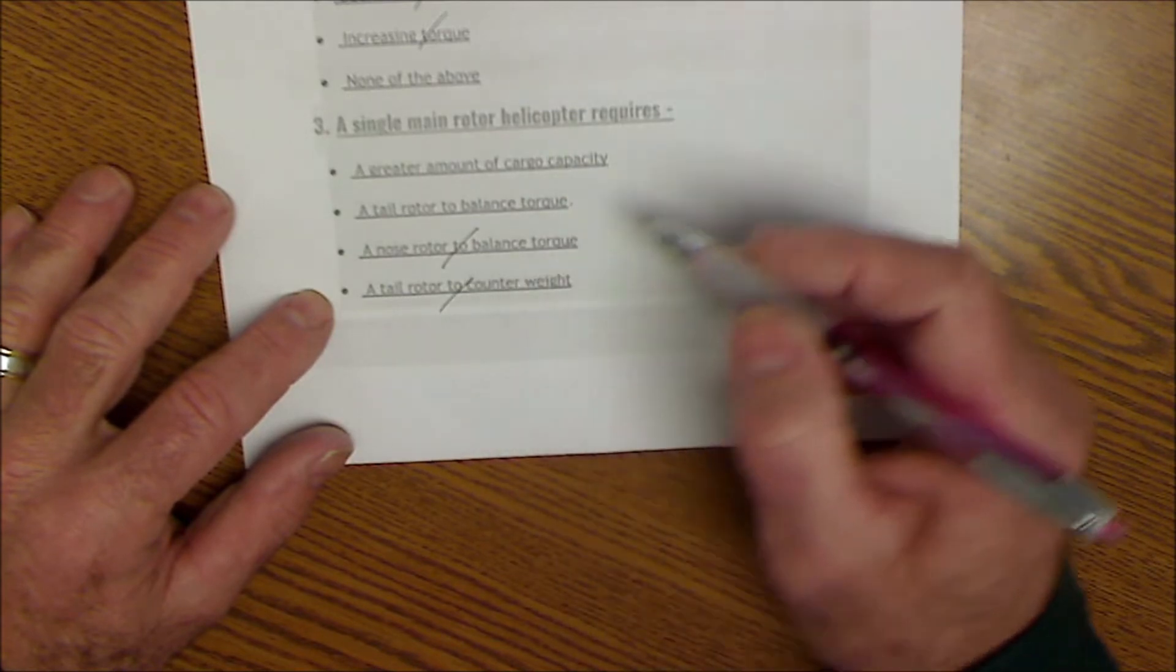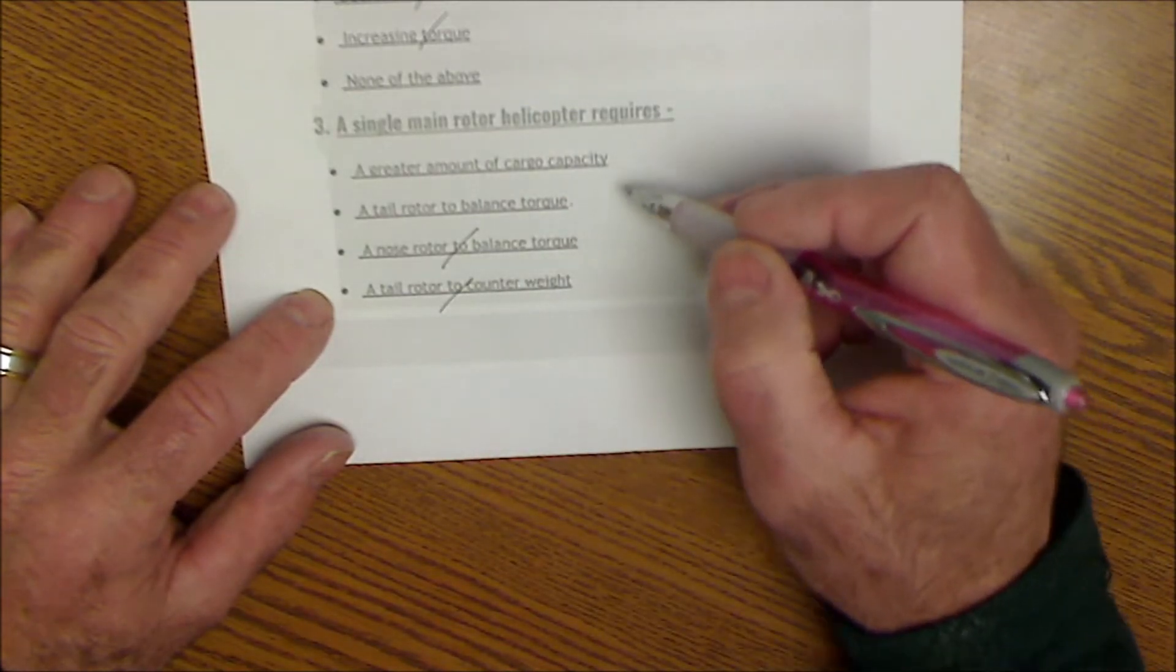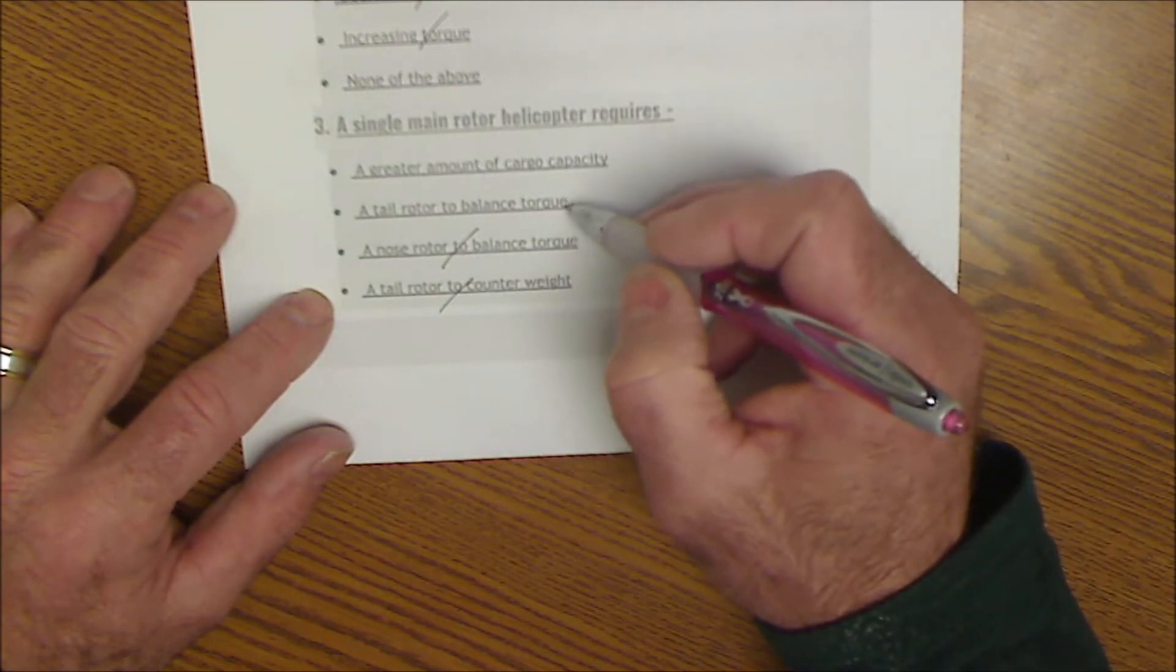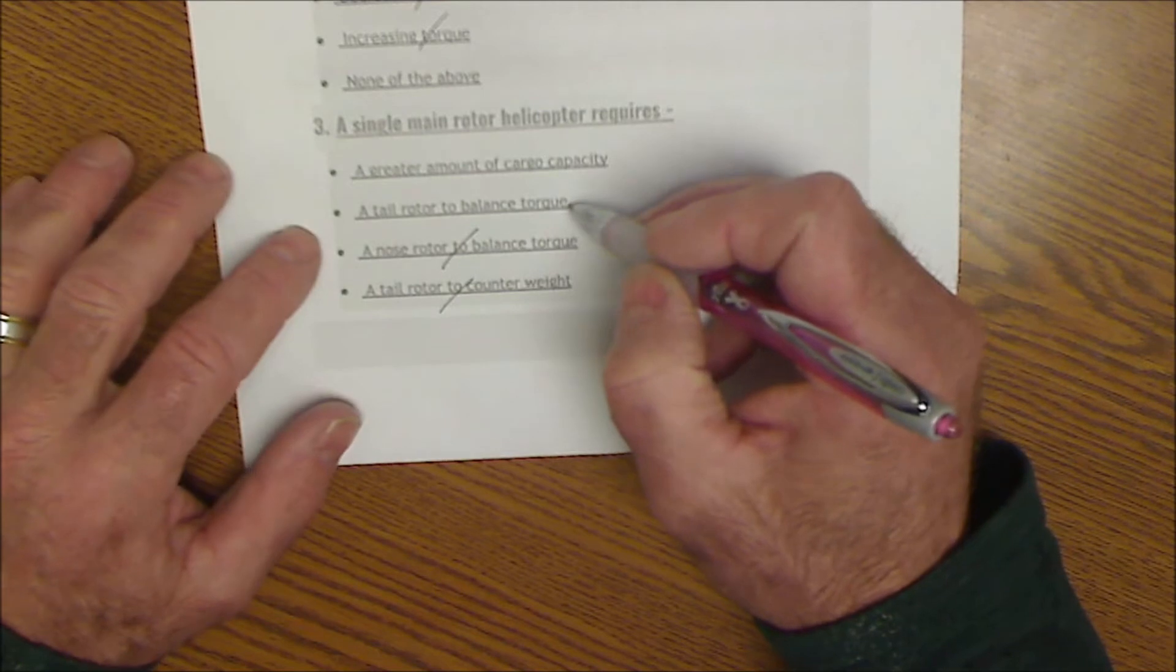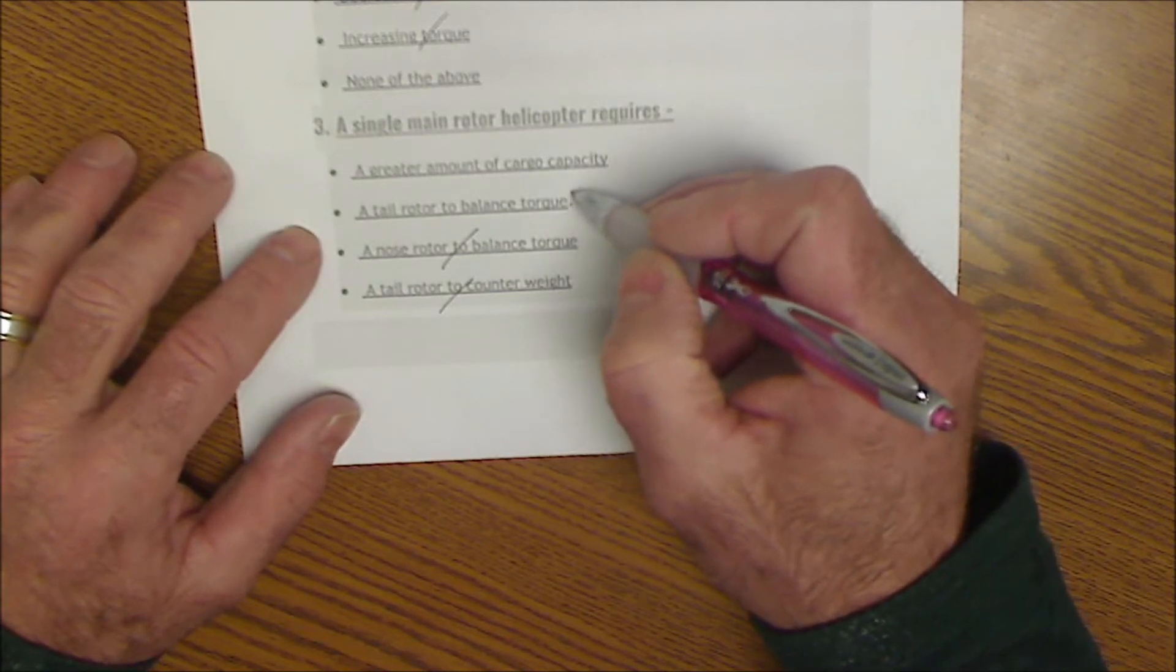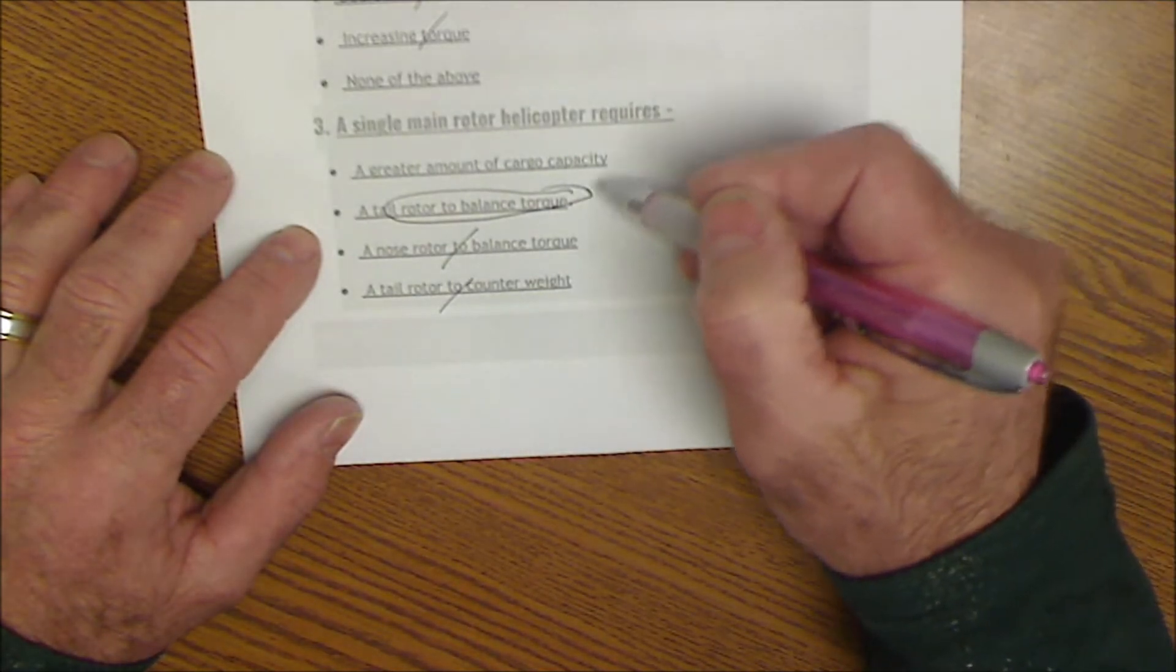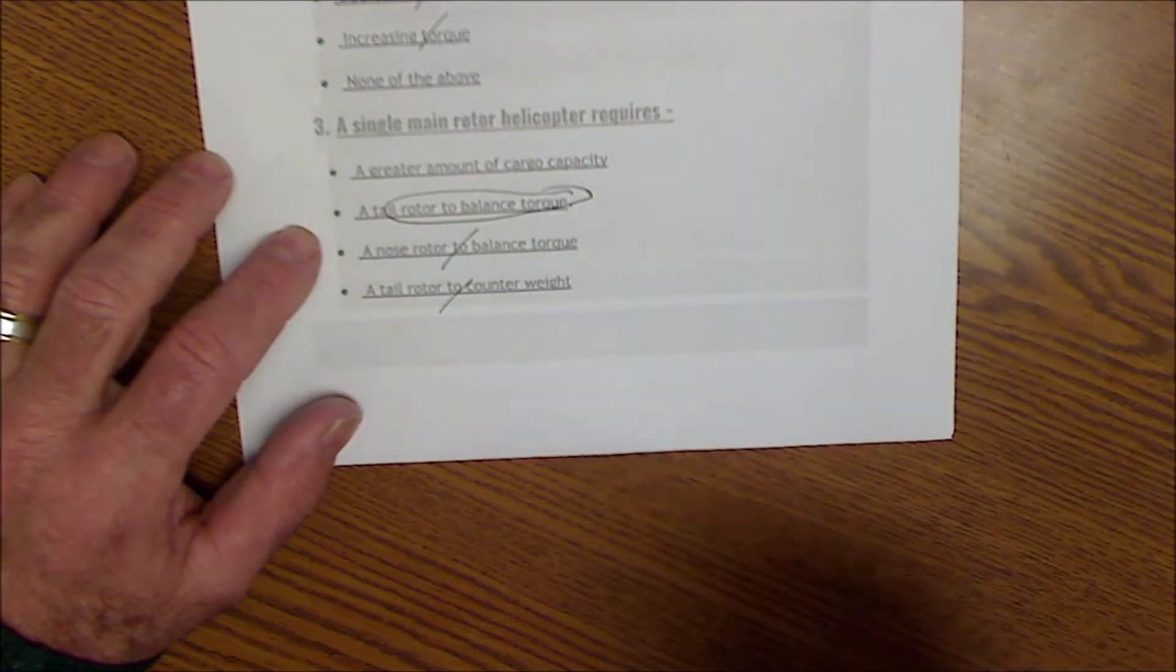A tail rotor is vertically spinning, specifically to counterbalance torque. So the correct answer is to counterbalance torque. This would be lift, and this would be lateral motion. Let's go on to the next page.